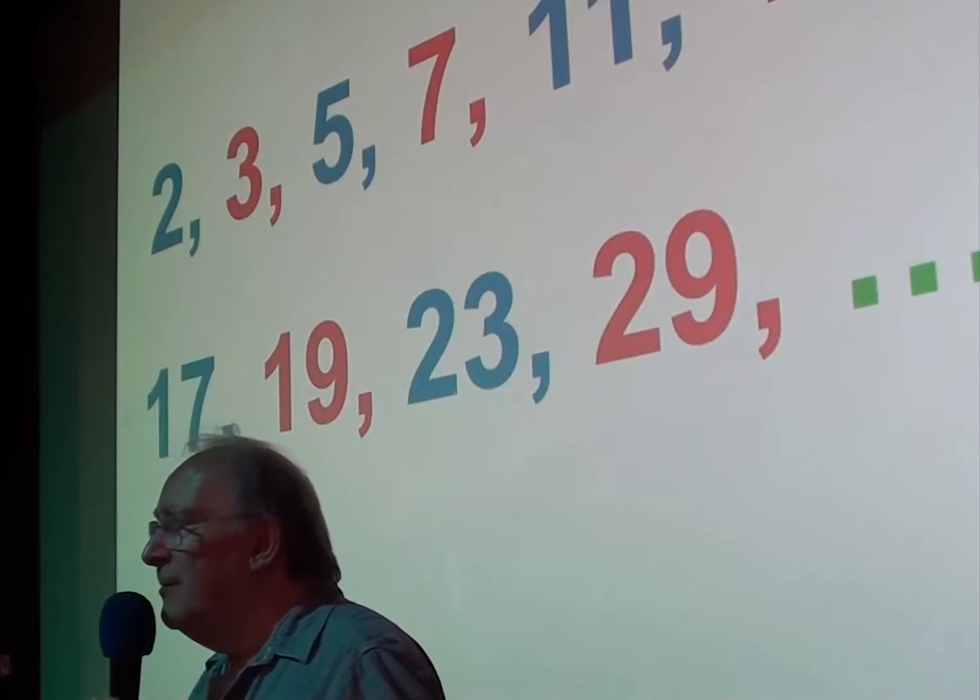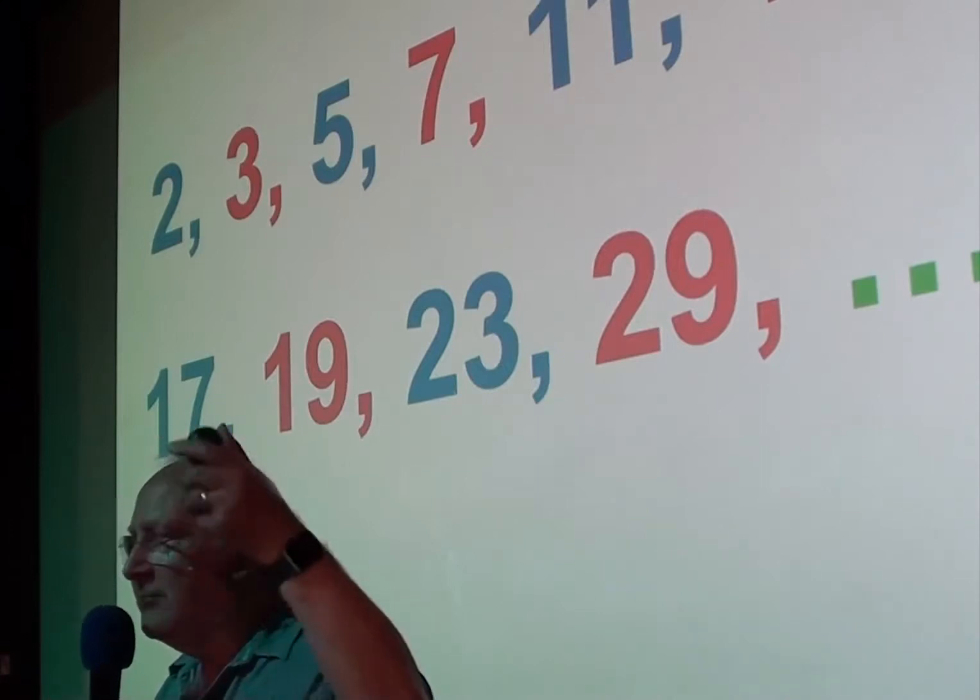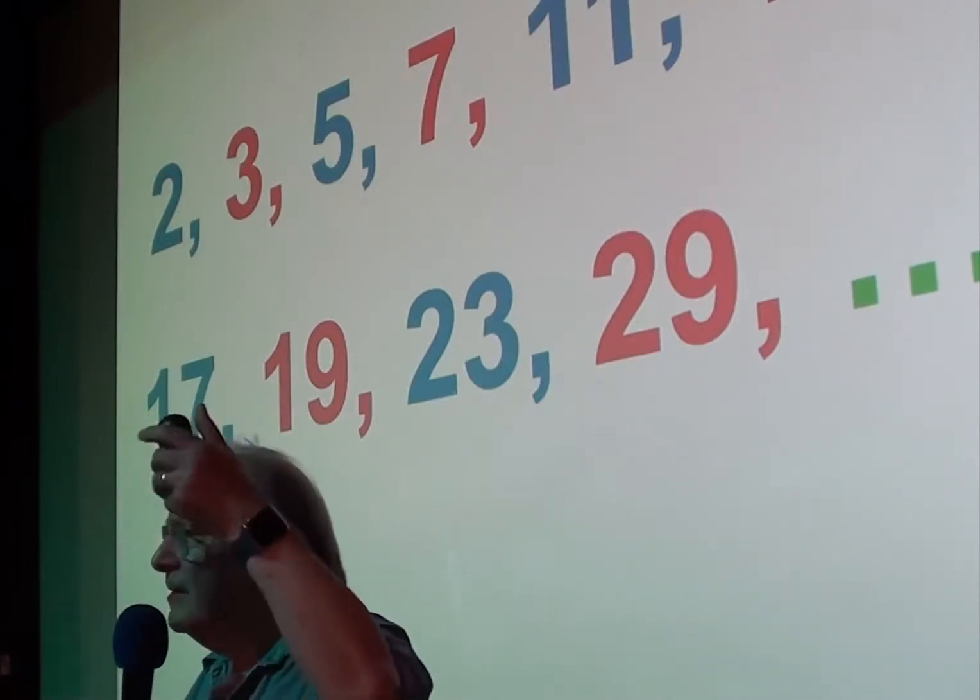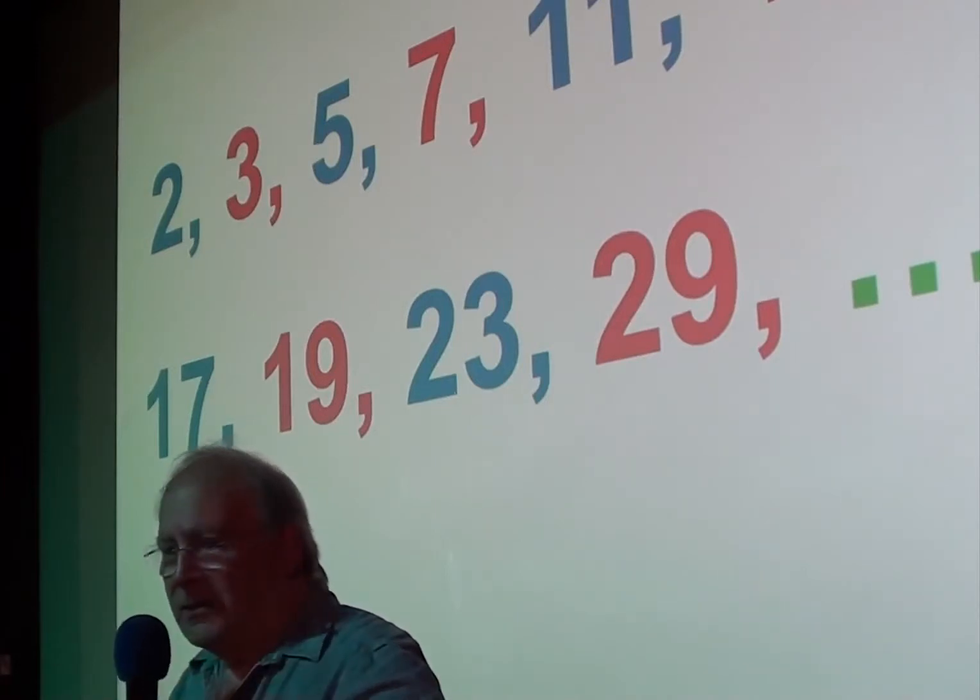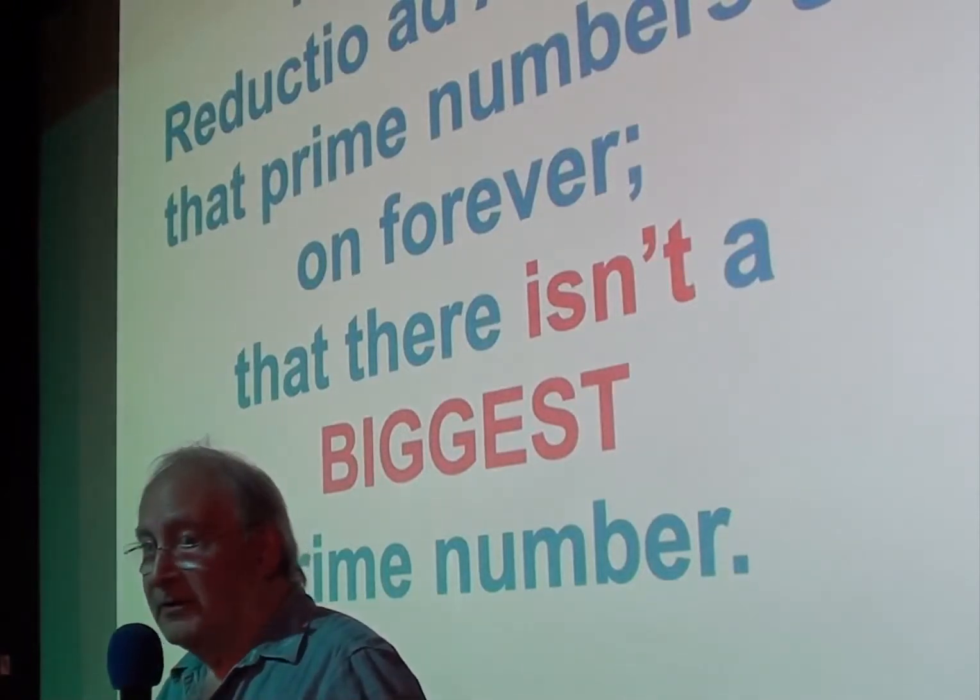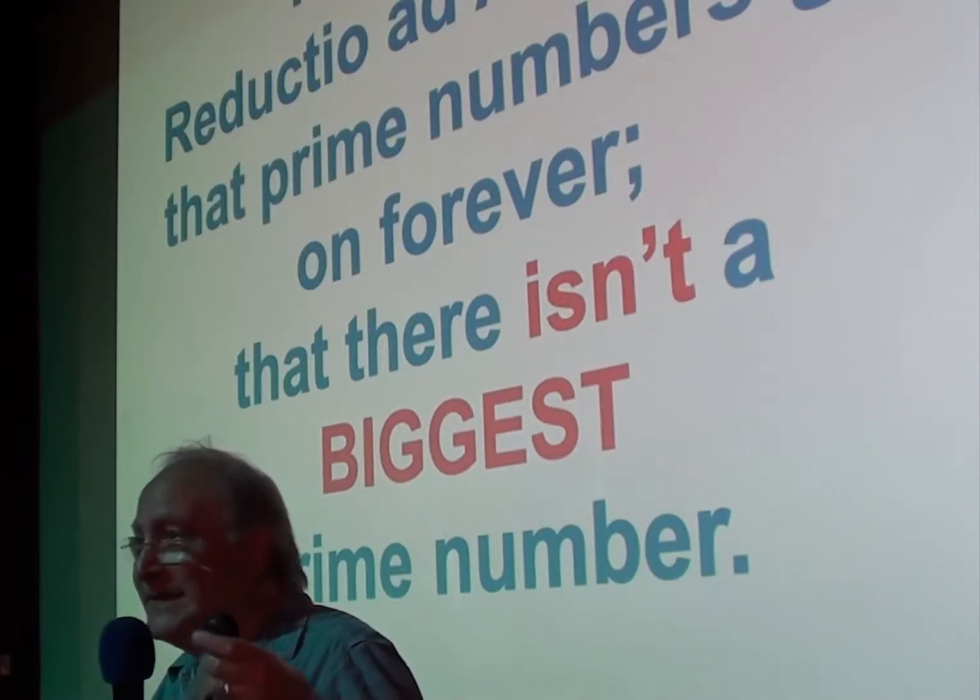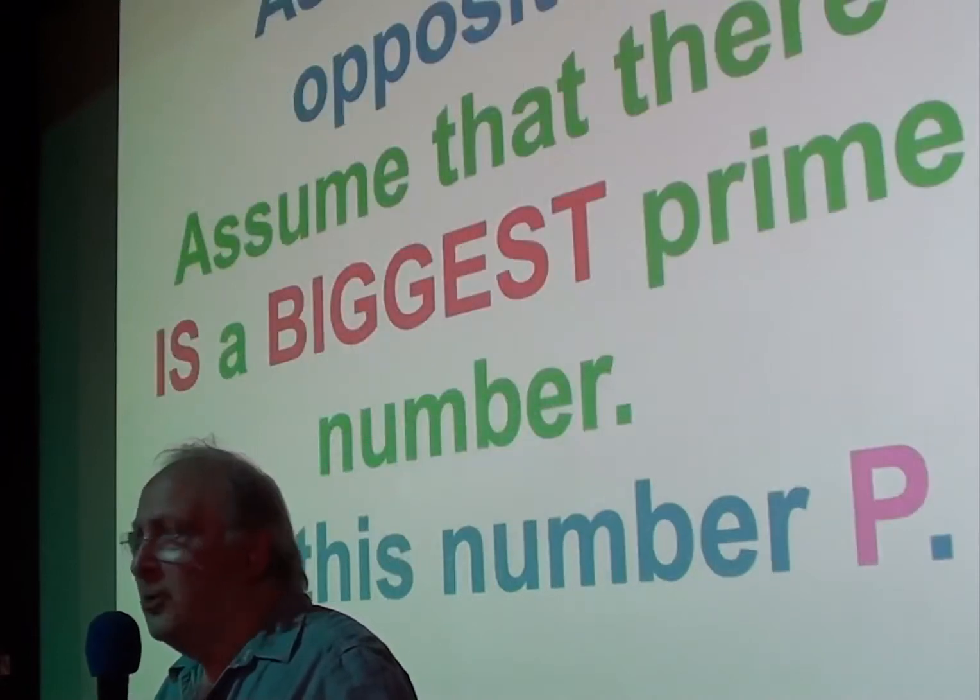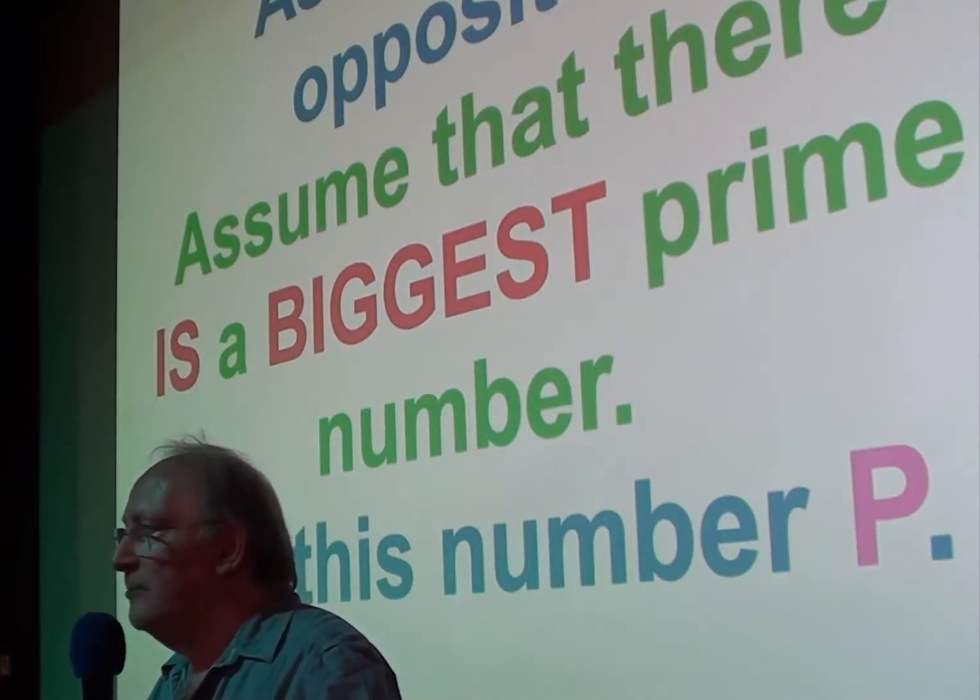Now, people wondered, do prime numbers go on forever? Because, when you go into millions and billions and trillions, prime numbers become very rare. You go for millions and millions without finding the next prime number. People wondered, do prime numbers go on forever? Or, can you get a prime number that's so big that there isn't one that comes after it? Now, to prove by reductio ad absurdum that prime numbers do go on forever, there isn't the biggest one. So, we want to prove that there isn't a biggest one. So, you assume the opposite. You assume that there is a biggest prime number. Call the number P.